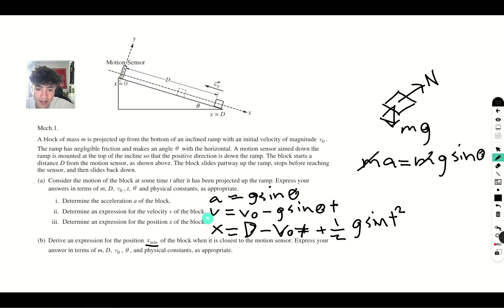So we know that it reaches equilibrium when the velocity is 0, meaning that g sine theta t is equal to v initial. And this happens at time v initial over g sine theta.